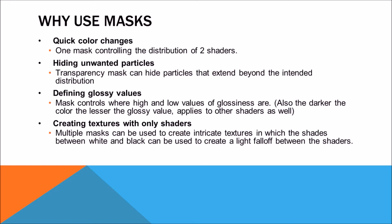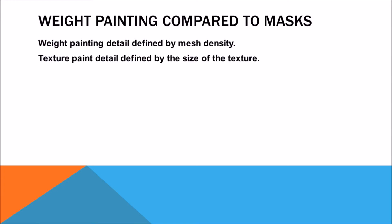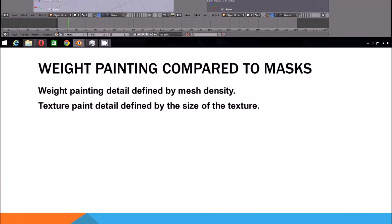So why would we want to use masks instead of weight painting? We know that weight painting can define the areas of a particle system in the vertex group option. Well, weight painting is defined by the mesh's density, whereas with masks it's defined by the detail of the texture density.